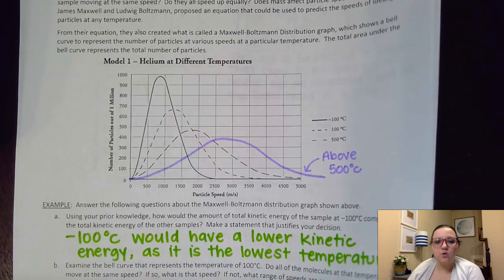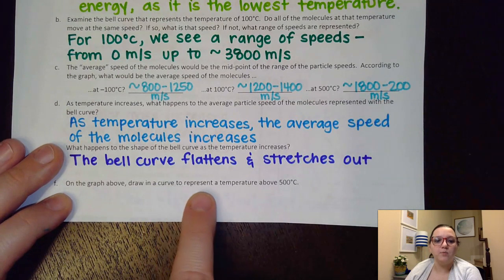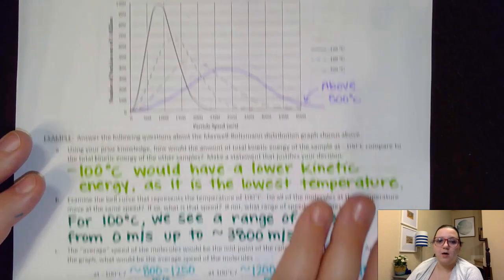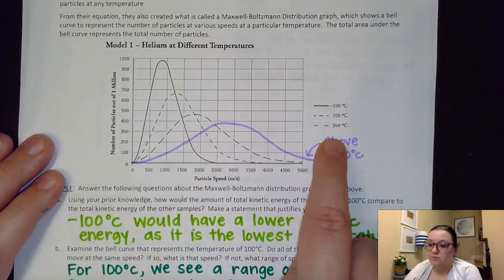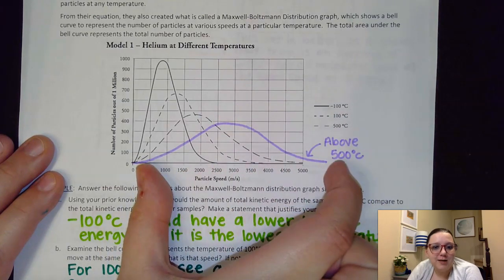So on the last question down here it asked us to draw in a curve to represent a temperature above 500 degrees Celsius. So again what I wanted to do is if I'm above 500, if I'm above the highest temperature here, then I wanted to flatten it and stretch it out.